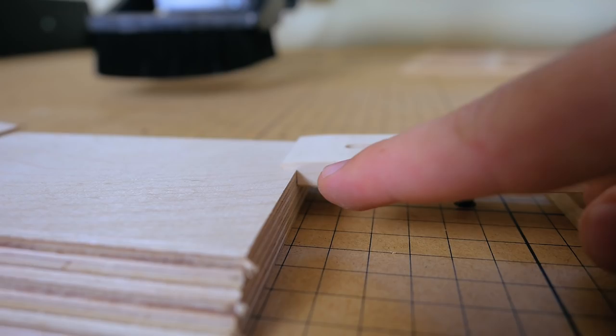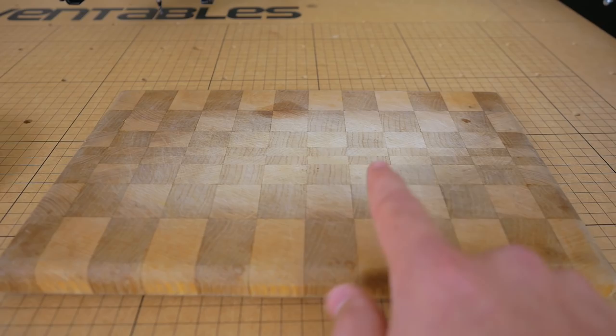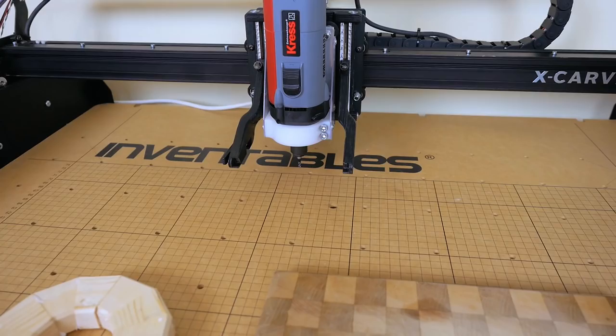What I would also like to do with the CNC is to surface workpieces, for example segmented rings or cutting boards. If you've ever made a cutting board, you know that getting the surface smooth is very labor intensive, especially the sanding.